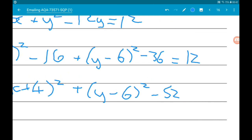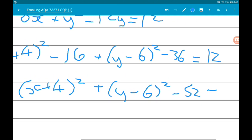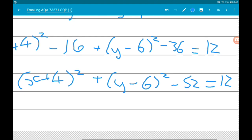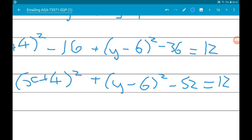So that is equal to 12. So finally we get x plus 4 squared add y minus 6 squared is equal to 64.